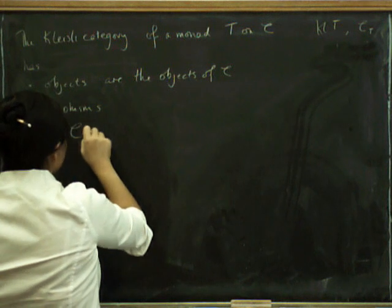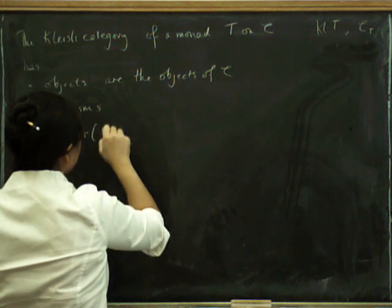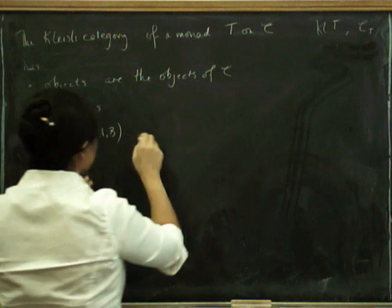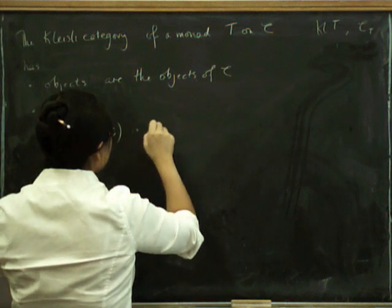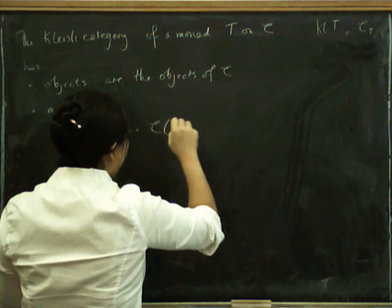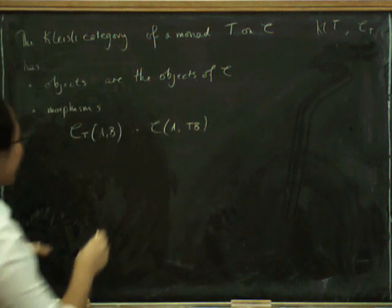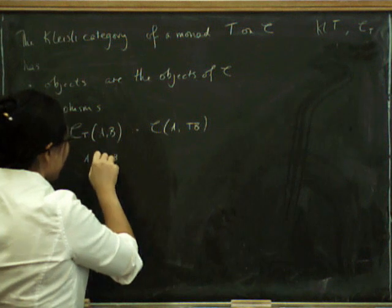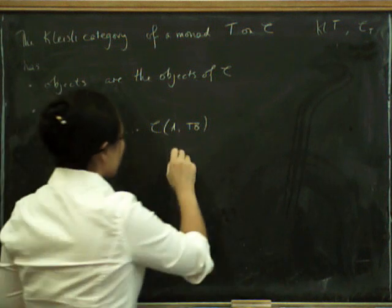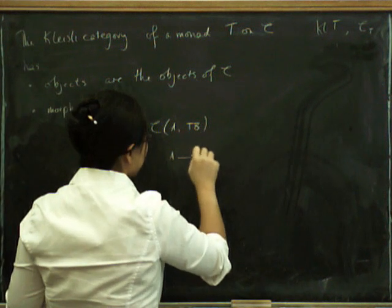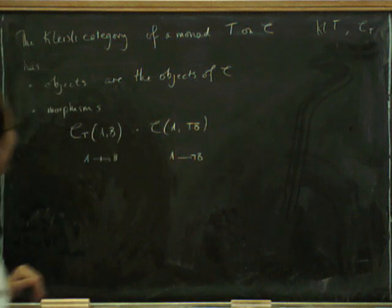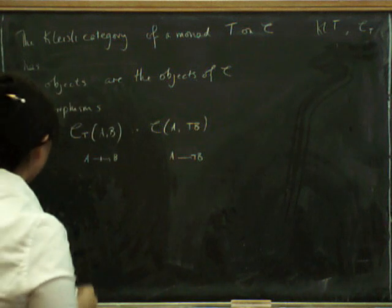So a morphism in the Kleisli category from A to B, the morphisms in here are defined to be the morphisms in C from A to TB. And to be clear about this, I'll write these as morphisms A to B with a line through them, so that we know what we're talking about, where these are just ordinary morphisms like that. Now we have to define composition and identity.